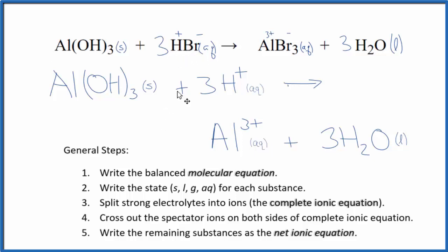You'll note that charge is conserved. We have 3 times 1 plus, so we have 3+ on this side and over here we have a total of 3+. And if you count the atoms up on each side, they'll be balanced as well.